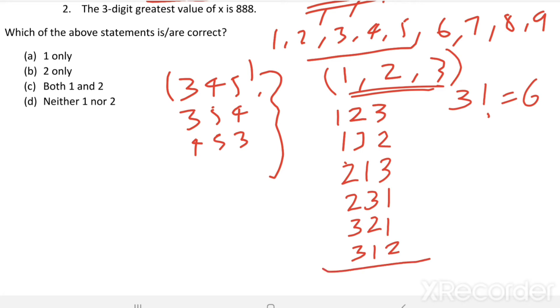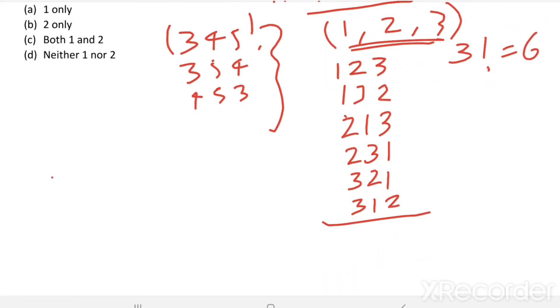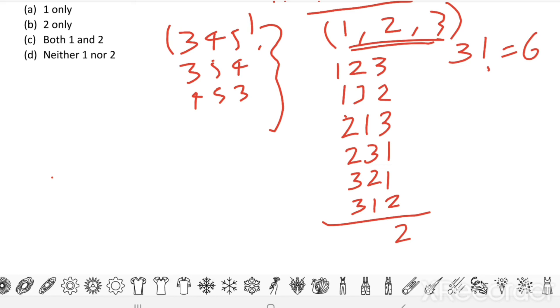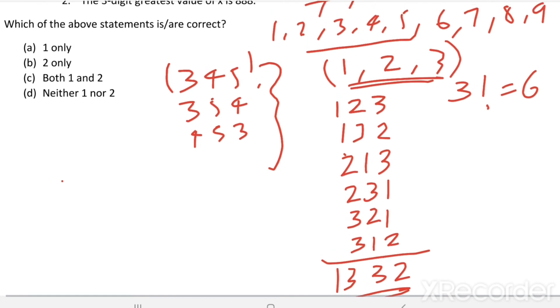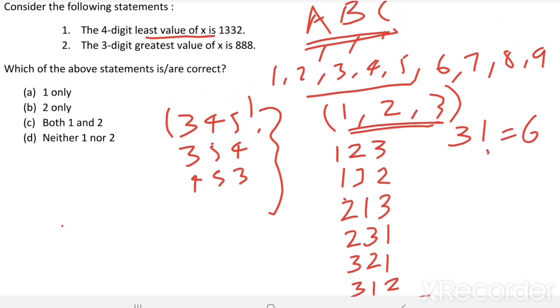Then, adding all these numbers. 2 plus 1, 3. 3 plus 1, 4. 4 plus 3 equal to 7. Then, 7 plus 2, 9. 9 plus 3 equal to 12. Then, carry over 1. Again, here also, we get 12 plus 1, 3. Here, it is 13. So, the least possible value of X equal to 1332.